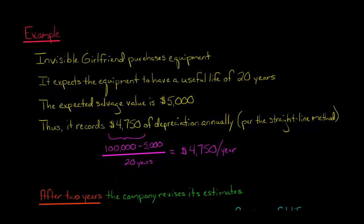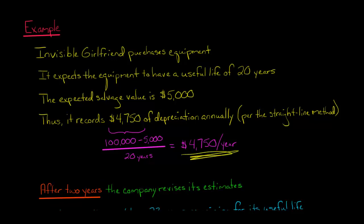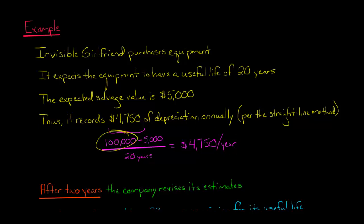Here's the change — the revision. After two years, they've taken this amount of depreciation twice, so $4,750 times two is $9,500. The net book value of the asset at this point is $100,000 minus $9,500, which is $90,500. We'll come back to that in a minute.